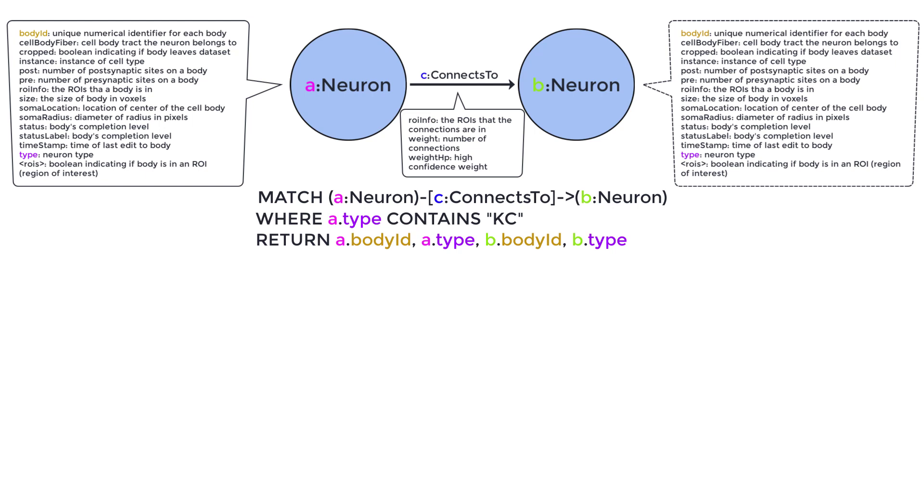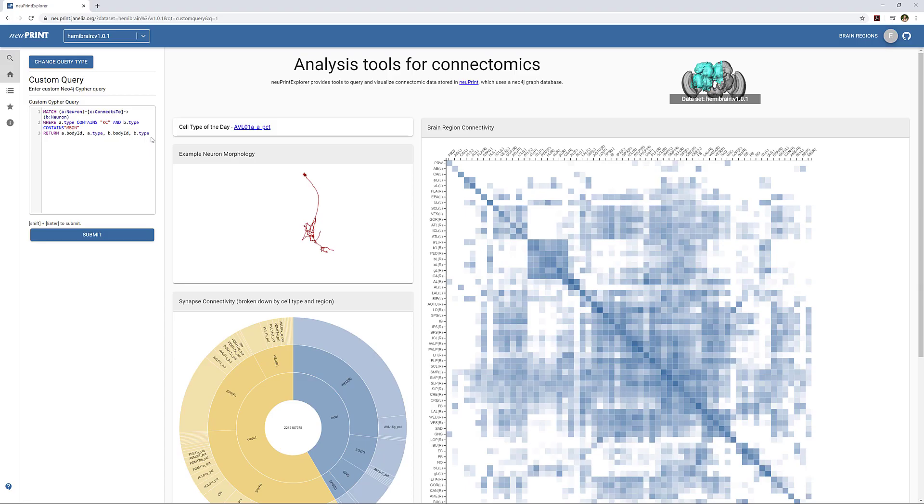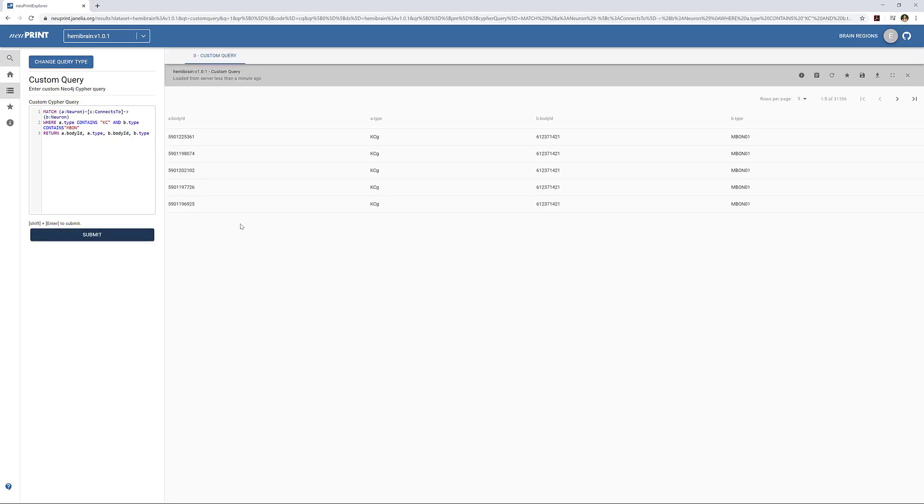We can do the same with neuron B, but with M-bond. Notice that we use AND to separate objects in the where statement, but we use commas to separate objects in the return statement. We can now try this query in NewPrint, and we see that we get 31,000 results. There is nothing inherently wrong with that, but let's narrow down these results even further with more where filters.